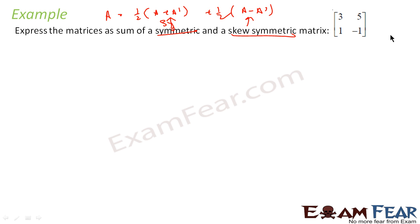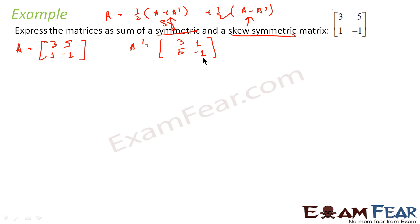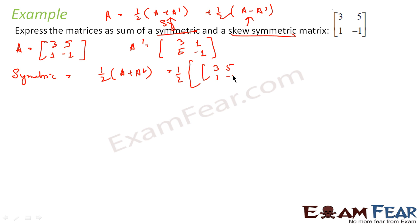So let me find this. A is [3, 5; 1, -1]. Let me find A' — rows become columns, giving A' = [3, 1; 5, -1]. Now I have to find the symmetric part, which is 1/2 (A + A'). That is 1/2 of [3, 5; 1, -1] + [3, 1; 5, -1], giving 1/2 of [6, 6; 6, -2].